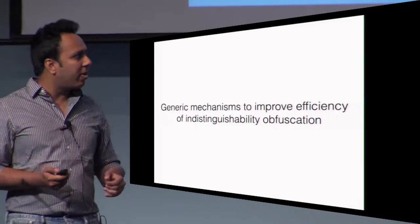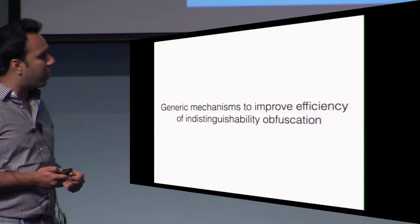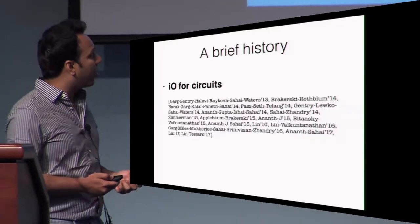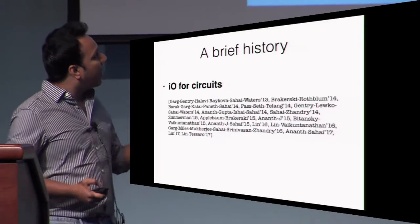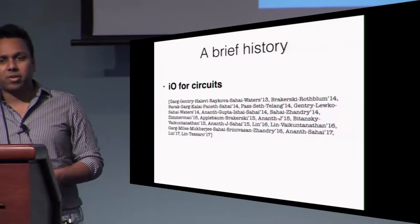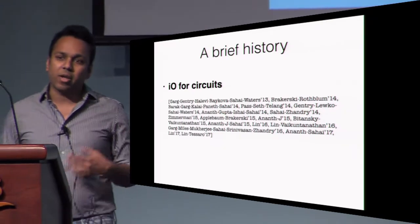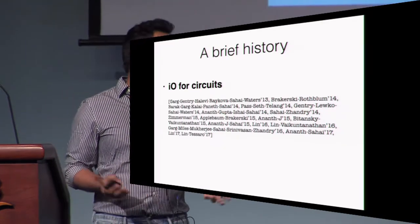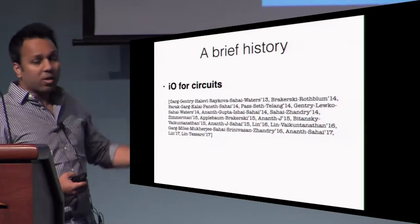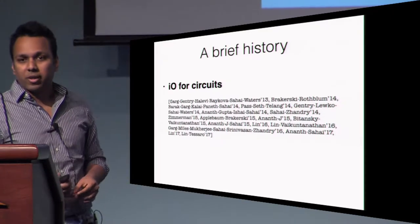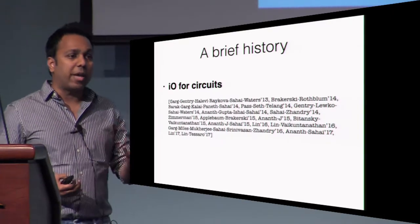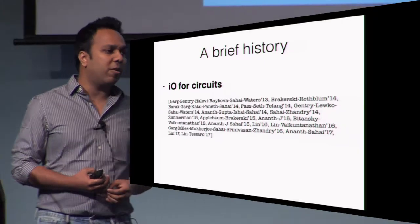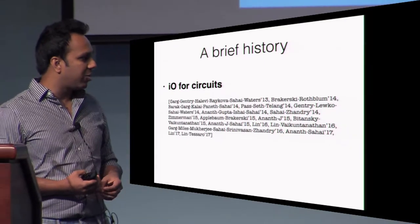Let me start with a very brief overview of the main lines of research in indistinguishability obfuscation. One of the primary lines of research is about constructing indistinguishability obfuscation for general circuits, and by now there's a lot of work in this area where the main motivation is to get better and better security based on weaker and weaker assumptions.